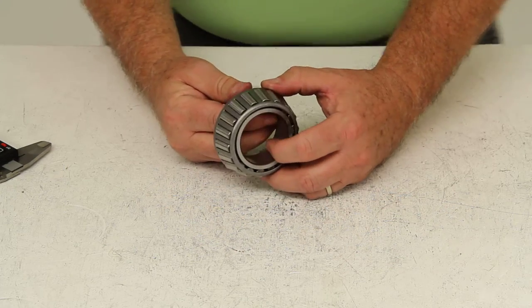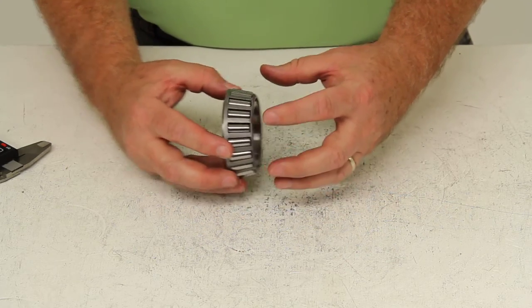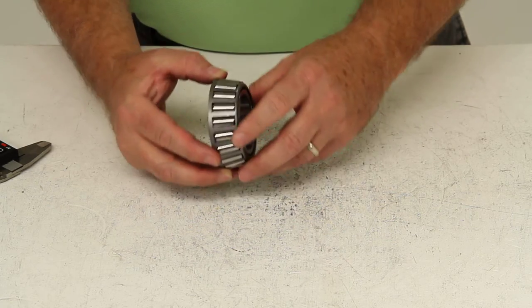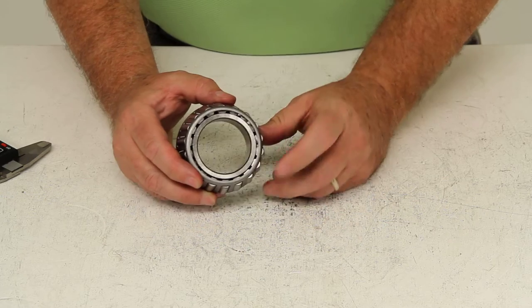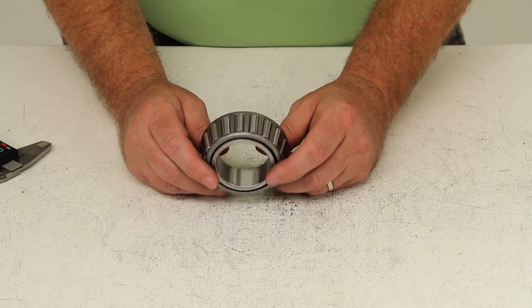Now there is one other component that is needed and that is the bearing race. The bearing race is the part that the bearing will sit in and rotate the bearings on this side. And that is sold separately. For this part you would need the part number 25520.